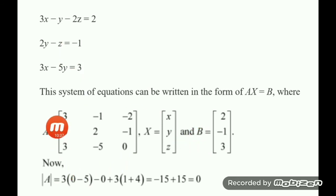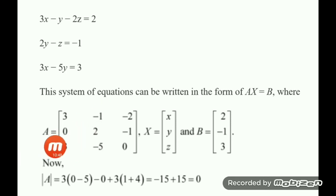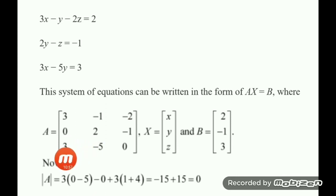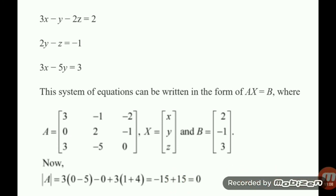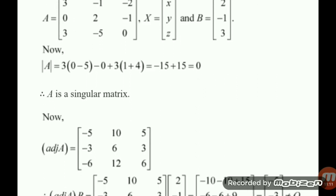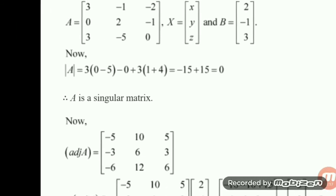Finding the determinant of A: expanding along the first column, 3 into (2 into 0 minus minus 1 into minus 5) minus 0 into something plus 3 into (minus 1 into minus 1 minus 2 into minus 2). Calculating: minus 15 plus 15 equals zero. Since the determinant of A equals zero, A is singular, and we cannot conclude consistency yet. We must find the adjoint of the given matrix.